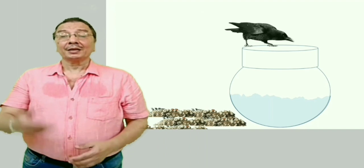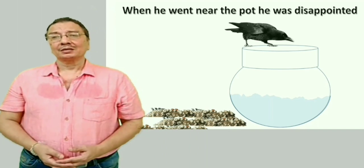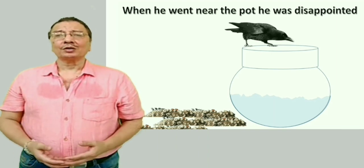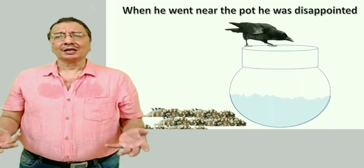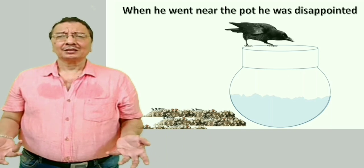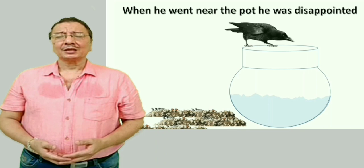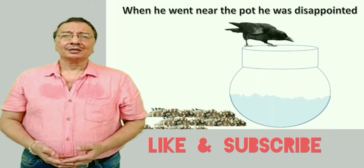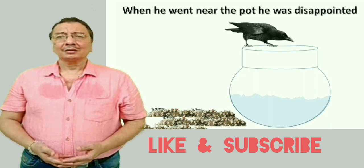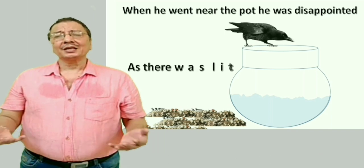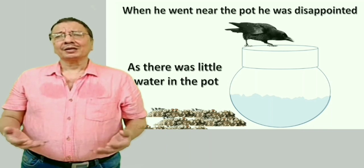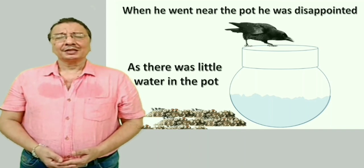Jab vah matke ke paas gaya, to uska dil toot gaya — When he went near the pot, he was disappointed. 'Disappointed' means dukhi hona, naraaz hona, dil toot jaana. As there was little water in the pot — matke mein pani bahut kam tha. 'Little water' means kam pani. 'There was' means 'vahan tha'.